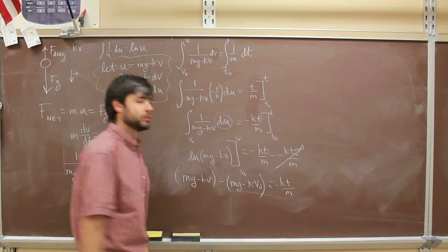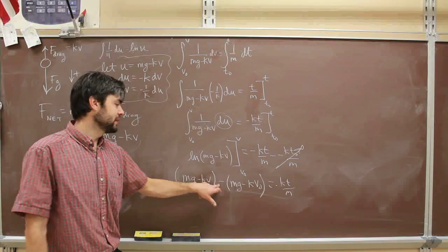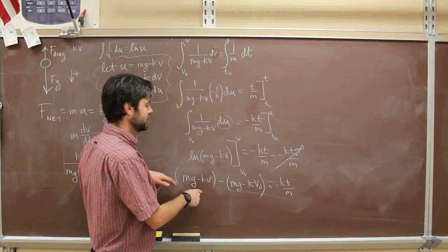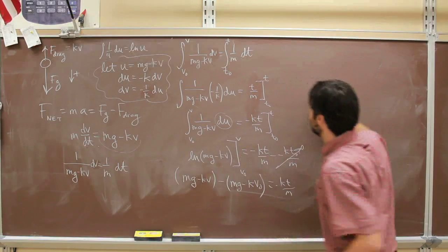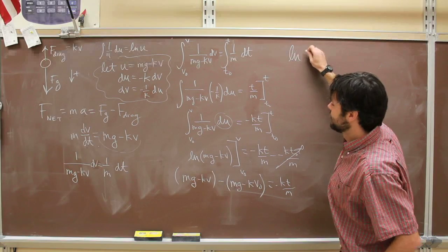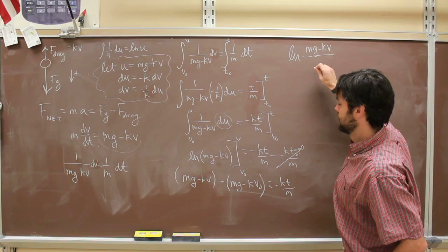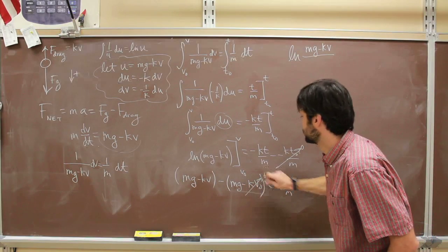Now there's a rule that if we've got a subtraction sign here, that we can say that this is equal to the natural log of this divided by that. So what does that look like? It becomes ln of mg minus kV over—oh, initial velocity, we dropped it. So that's 0. Over mg is equal to minus kt over m.